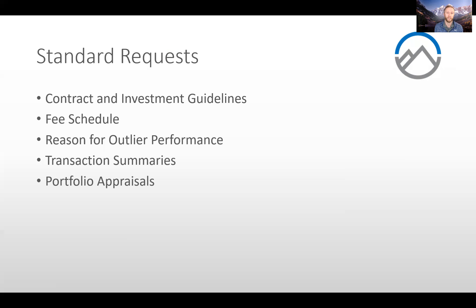Making sure that the account is still discretionary and placed in the correct composite, other items that Long's Peak can provide based on access to your system are transaction summaries and portfolio appraisals, which also support outlier performance. The verifier can look at transaction summaries to see if there were any timely cash flows that may have caused the account to perform differently, or look at portfolio holdings to make sure those holdings match the composite definition, or compare them to other accounts in the composite to help identify slight differences in why a particular account may be performing as an outlier.